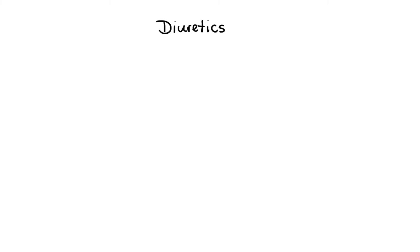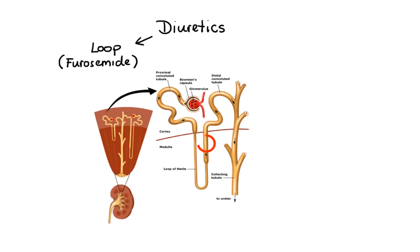Now the next major class of antihypertensive agents are diuretics. There are three major classes of diuretics used in the treatment of hypertension. First, we have loop diuretics such as furosemide, which work by reducing reabsorption of sodium chloride in the kidneys, leading to significant diuresis. With less volume in the vascular space, less blood returns to the heart, so cardiac output decreases, leading to decrease in blood pressure, particularly in patients with volume-based hypertension and chronic kidney disease.